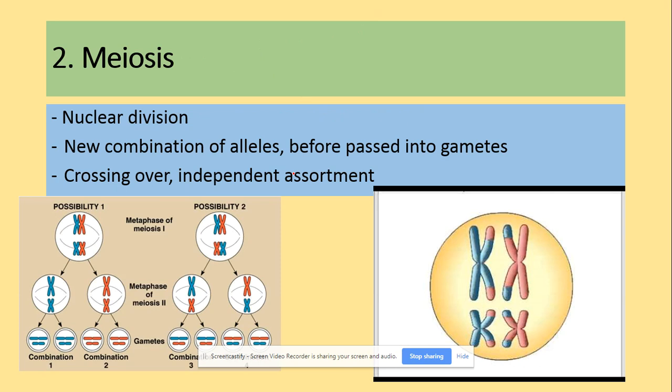So meiosis then is the nuclear division where at the end, we are going to get four genetically different daughter cells. The combinations of the alleles will arise as the process of the crossing over and the process of the independent assortment. If you don't remember those processes, have a look at the video on meiosis. But to quickly recap, crossing over is the process where the chromatids of the homologous pairs of the chromosomes will exchange the parts. As the effect of this, you are going to achieve a new combination of the alleles.